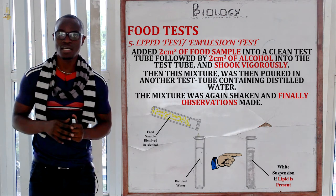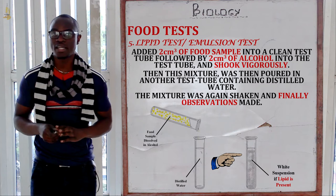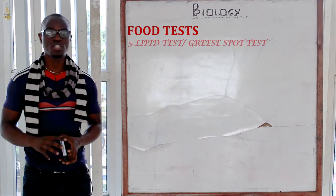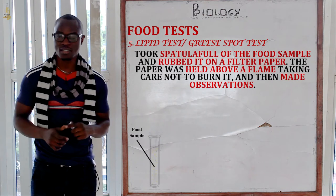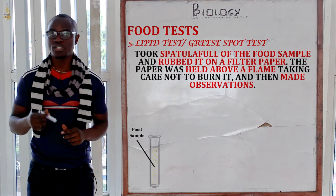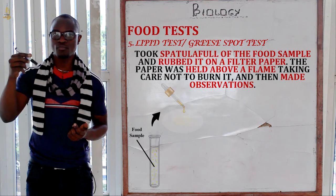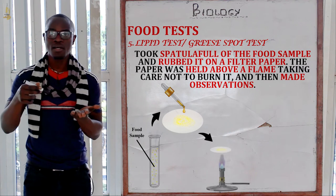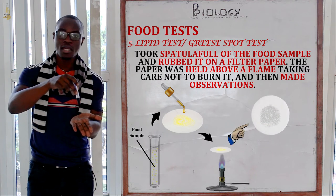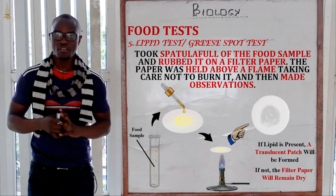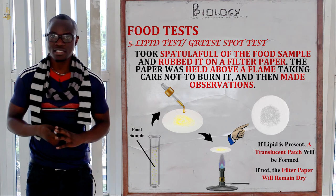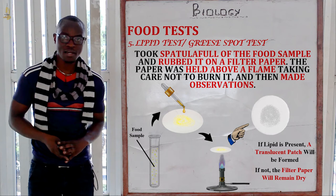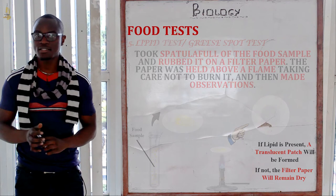But if lipid is not present, the liquid will most likely remain clear. There is also another test for lipid called the grease spot test, where we take a small food sample using a dropper and place it on filter paper. If lipid is present, a translucent patch will be formed on the filter paper.